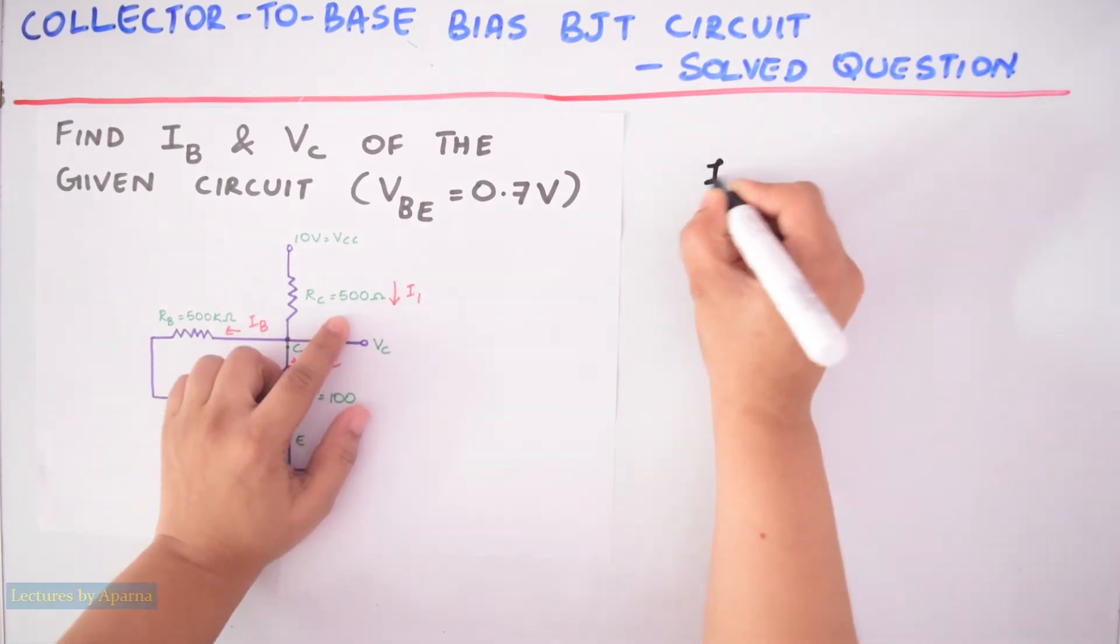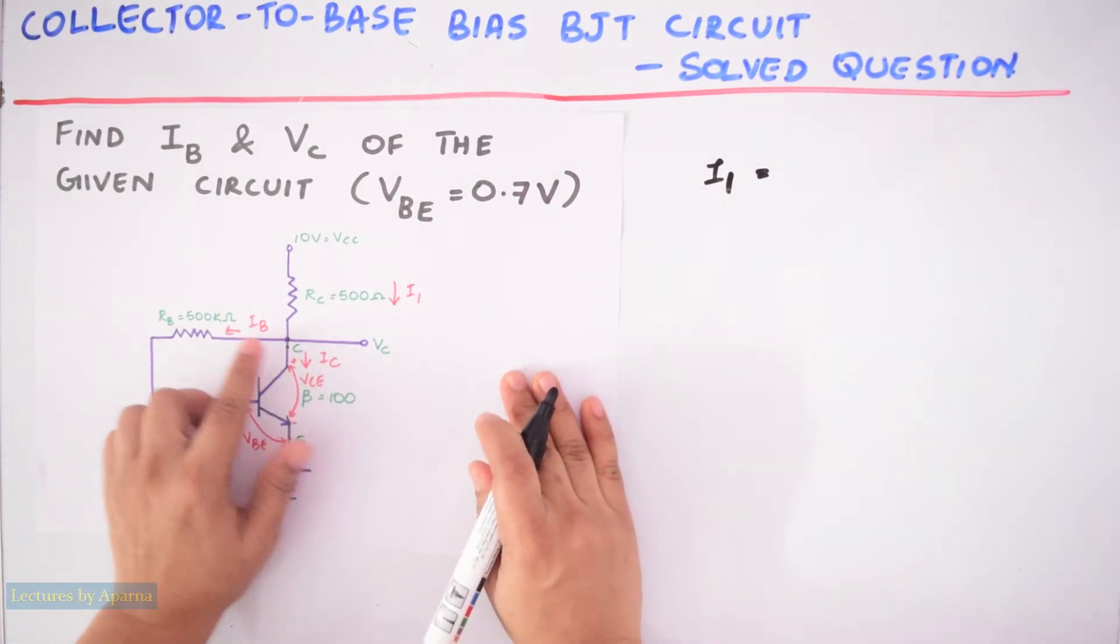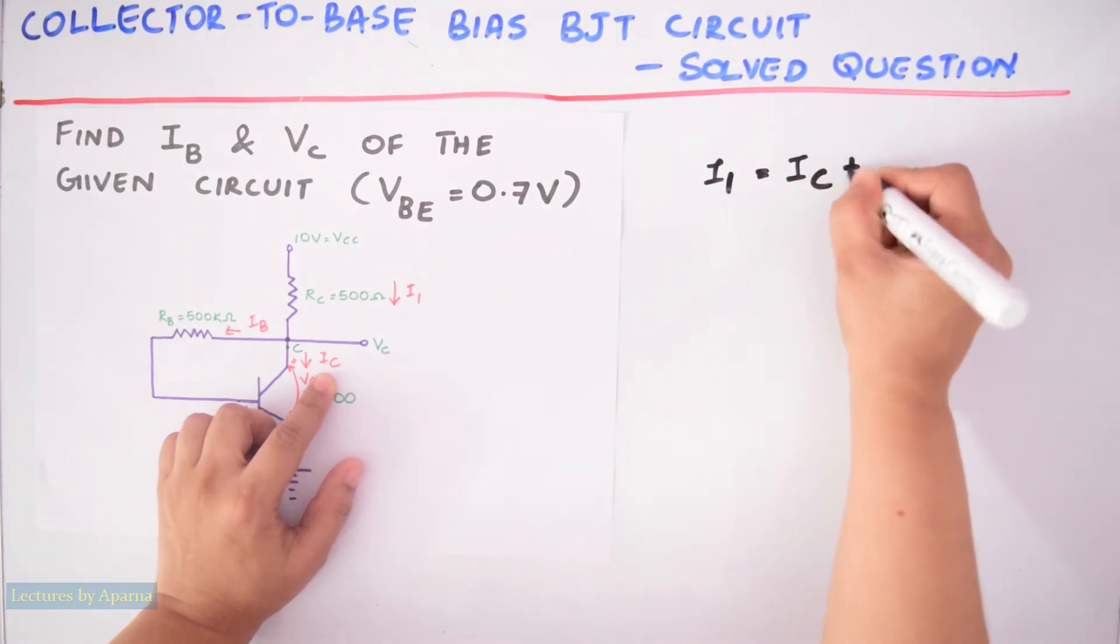So current entering is I1. I1 is equal to IC plus IB.